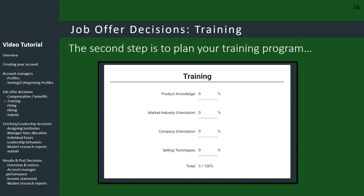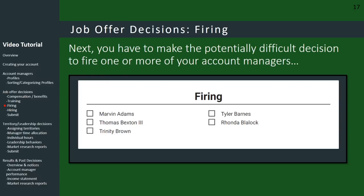Scrolling down, you see information about the training program. You put a percentage in each field to indicate how much you want to emphasize product knowledge, etc. Make sure the numbers add up to 100%. Next is firing — you just check off whoever you want to fire, though you do have to pay a significant severance package for everyone that you fire.